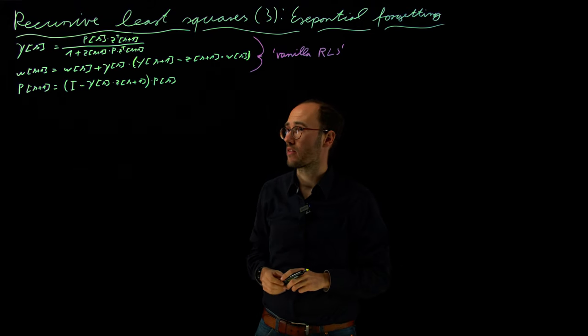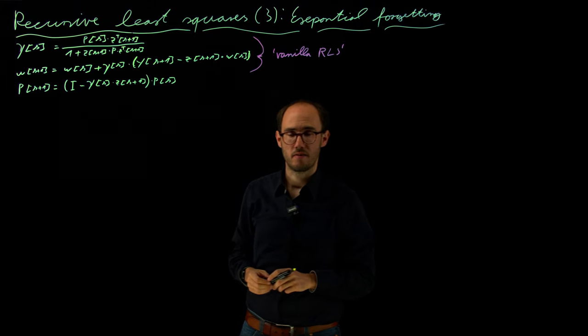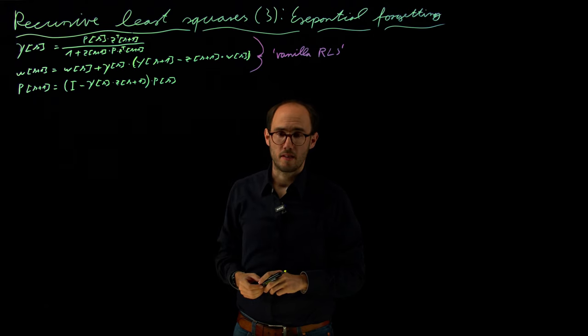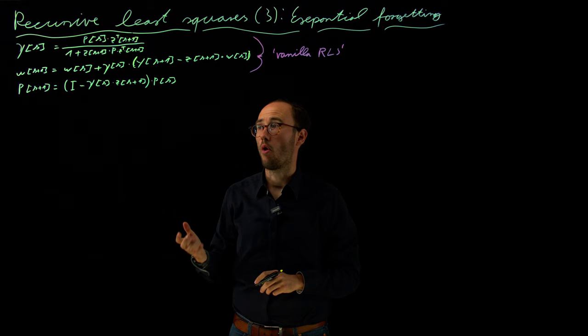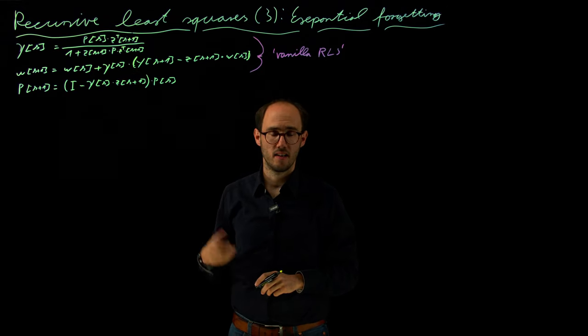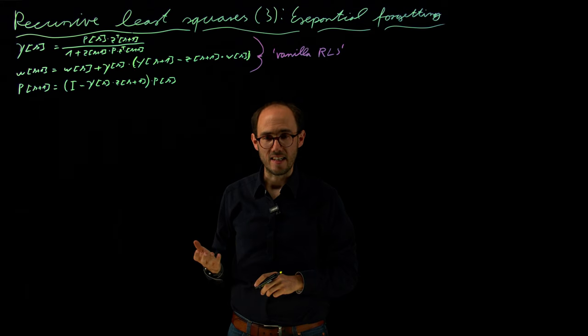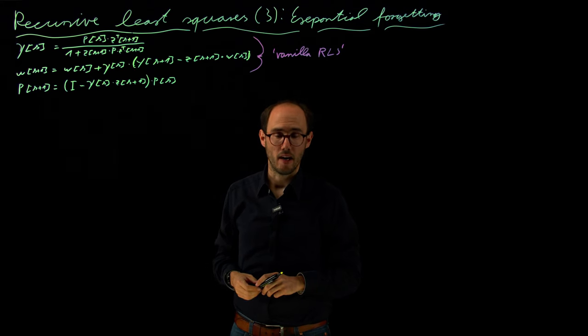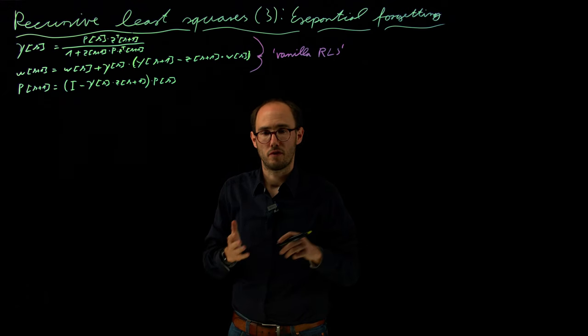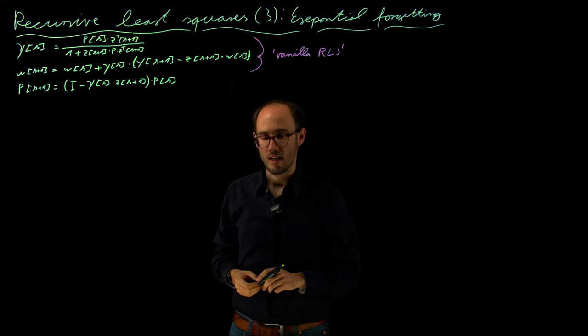Okay, so that was basically the outcome from the last video, and one property of this estimator is that we will basically consider all previous data steps or data points Z in the regression vector equally in weight. So that means that over time, we will basically not forget something.